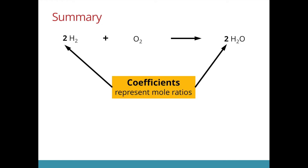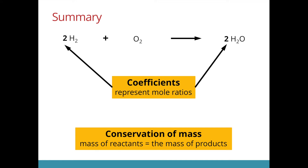Let's sum up what we have learnt. The numbers in front are called the coefficients and they represent the mole ratio. We also talked about the conservation of mass — the total mass of the reactants will be the same as the total mass of the products because nothing is created nor destroyed. The atoms are simply rearranged during the chemical reaction. When we come to questions on calculations, there is a 4-step method that we can follow.